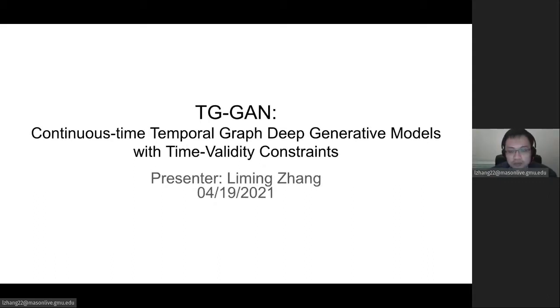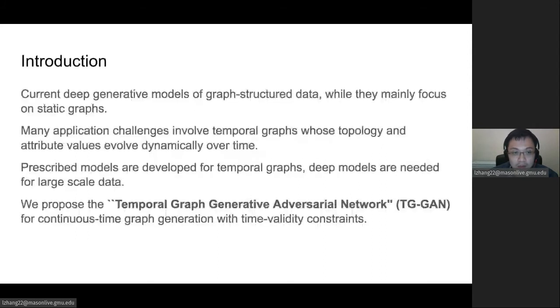Thank you for coming to this presentation. This paper is called Continuous Time Temporal Graph Deep Generating Models with Time Validity Constraint. This is Li Min Zhang. First, introductions. As we know, current deep-generated models of graph-structured data mainly focus on static graphs. There are many application challenges involving temporal graphs whose topology and attribute values evolve dynamically over time.